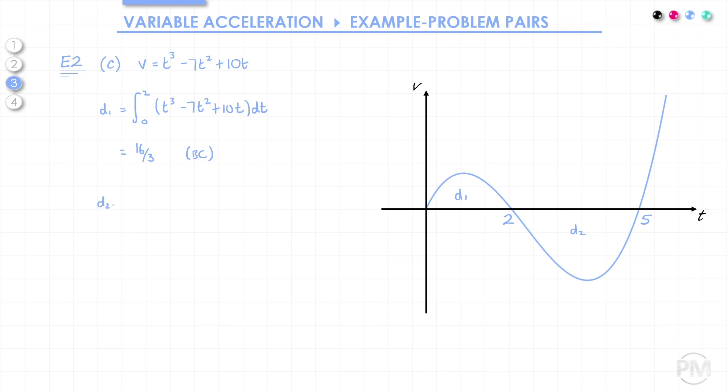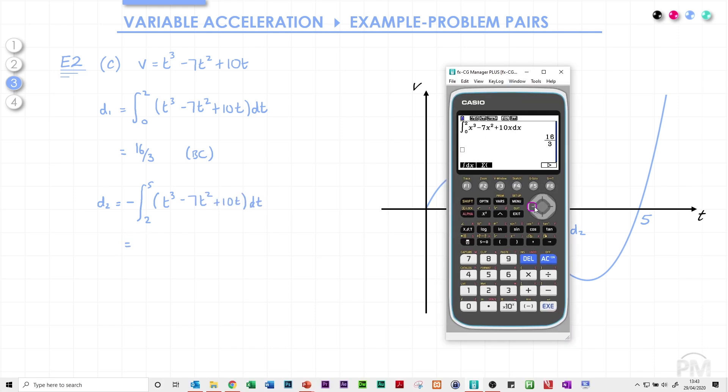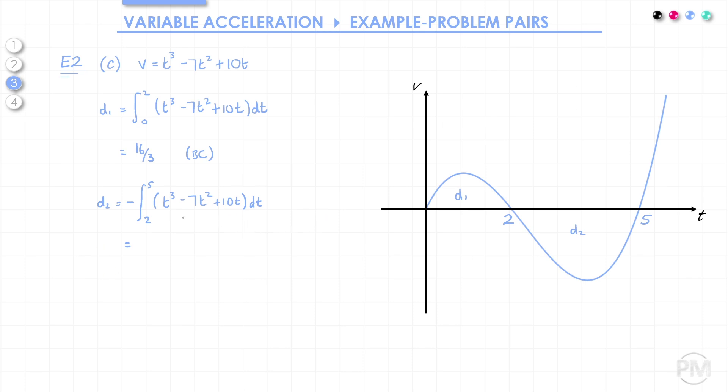For the second distance, I'm going to anticipate the fact that I know the answer will be negative, but really, I want the absolute value. I want the positive version. So I'm going to put a minus sign in before the integral, because I know the answer to the integral will be negative. So this time, we'll have the same integral, but between the limits 2 and 5. The answer to the integral is minus 63 over 4, but as we've got a minus sign in front of our calculation, we're going to make the answer positive. So 63 over 4.